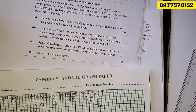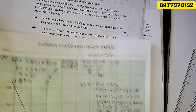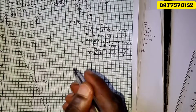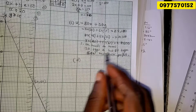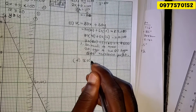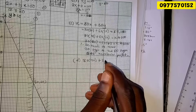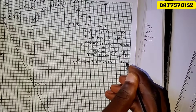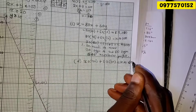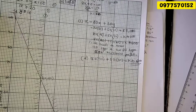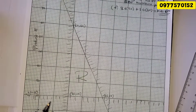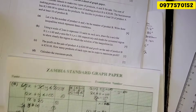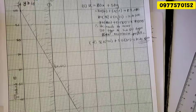The last part asks to calculate the maximum profit. Using Z equals 80 times 20 plus 50 times 60, the maximum profit is 4,600 ngwee. We are done with this question. If you followed along to this point, please consider subscribing and liking the video. Thank you so much.